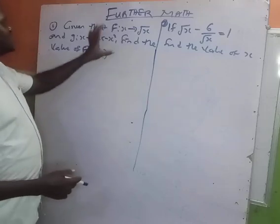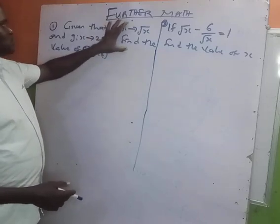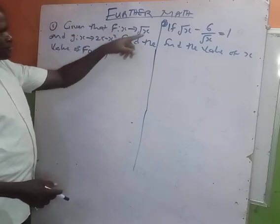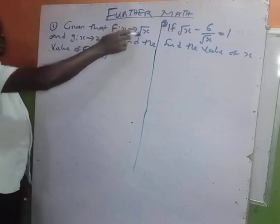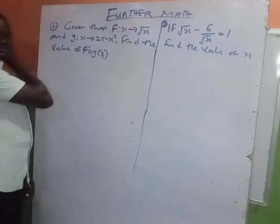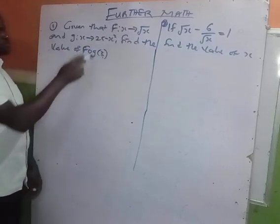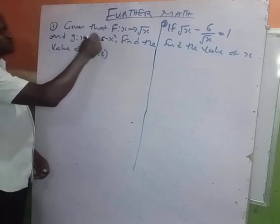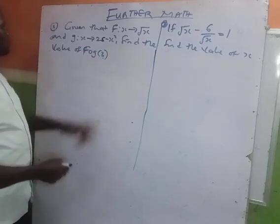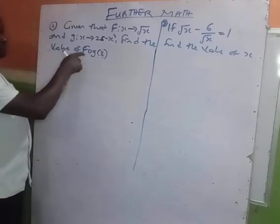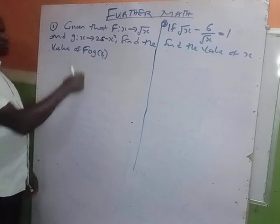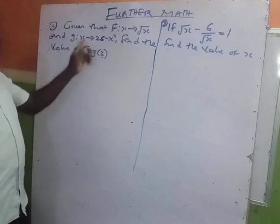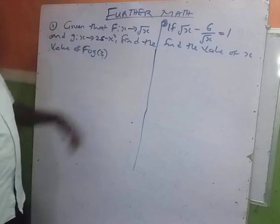Welcome, let's solve this question. Given that f(x) = √x and g(x) = 25 - x², you have to find the value of f of g — that is, the composition of these two functions.